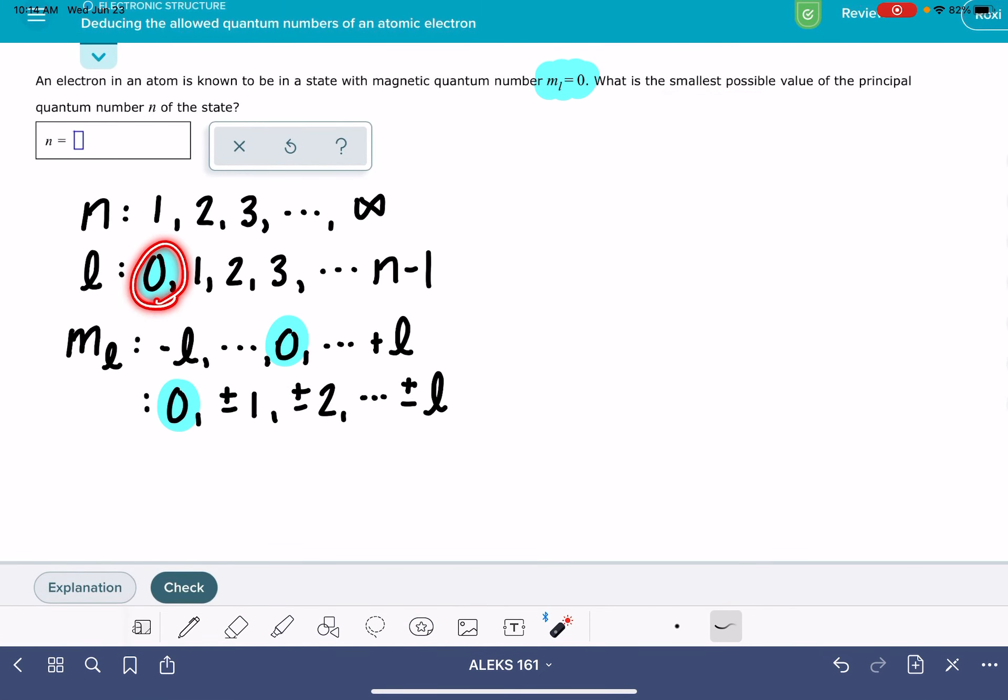Now I have the smallest possible value of l, I want to figure out the smallest possible value of n, which is just going to be one, the smallest possible value of n.